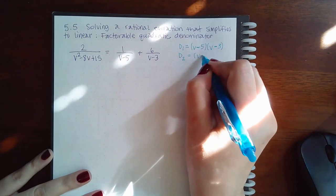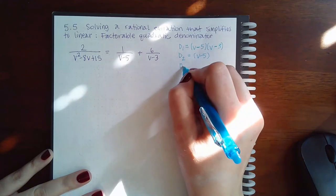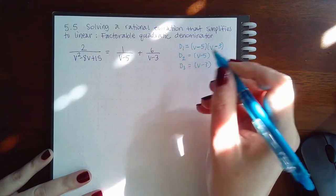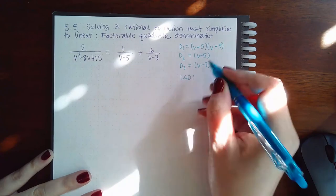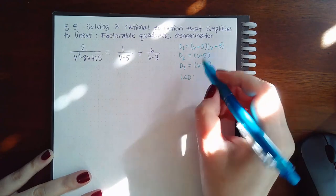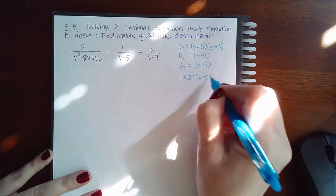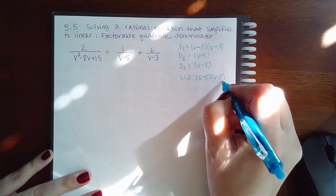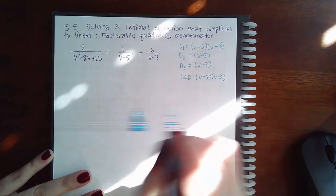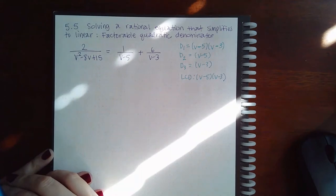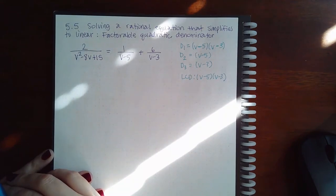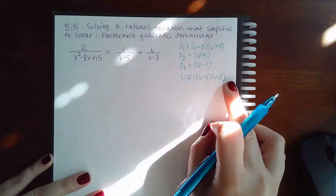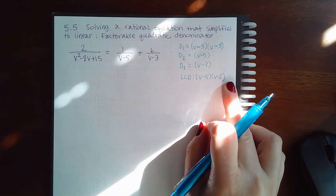The second denominator is just V minus 5, and the third denominator is just V minus 3. So the LCD will be what they have in common. These two have a V minus 5 in common, these two have a V minus 3 in common, and there's nothing else distinct from all of them, so there are no other distinct factors to include.